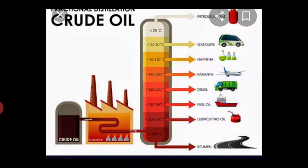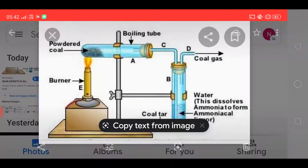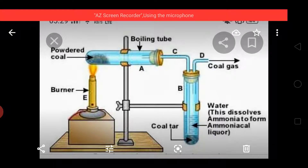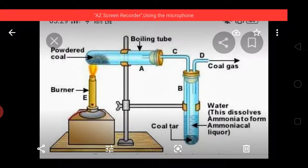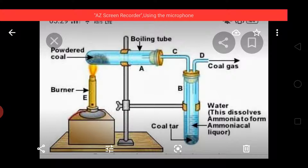From this process we get bitumen, whereas in case of tar it is destructive distillation — destructive distillation of wood and coal. Here, powdered coal is heated, passed through water, which dissolves ammonia to form ammoniacal liquor, and at the bottom we have coal tar. This is the destructive distillation process to get coal tar, which is brown in color.